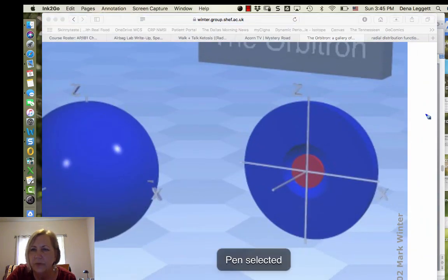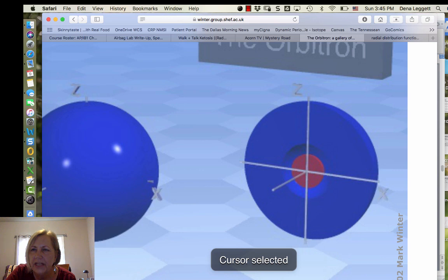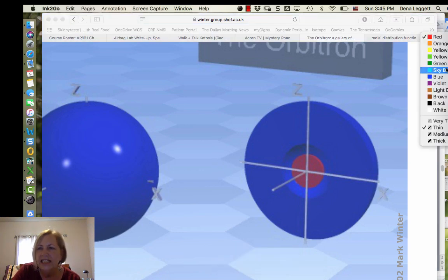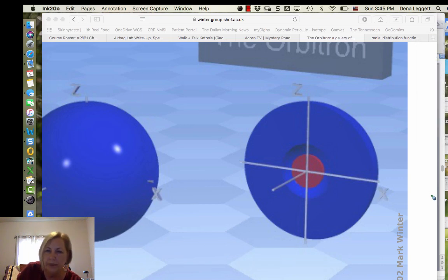Now, in this case, what we would have is something called a node. And in a node, we actually have a region in space where there is zero probability of finding an electron. So if you looked at your radial distribution function for this, it might look something like this. There's a finite chance of finding that electron close to the nucleus.